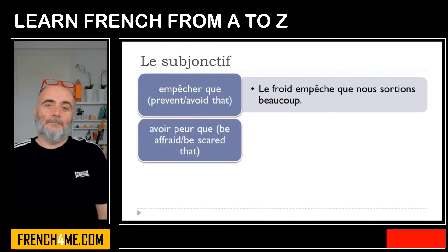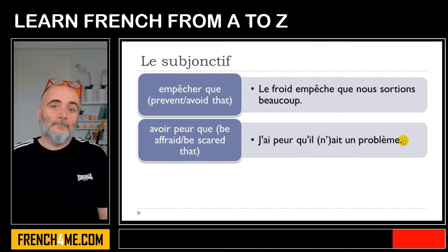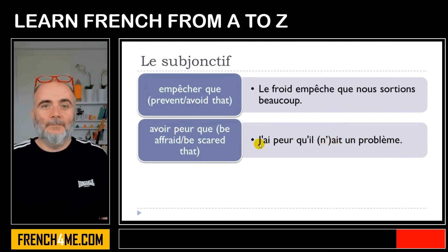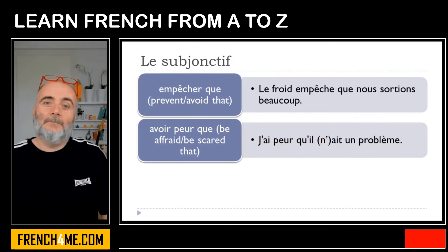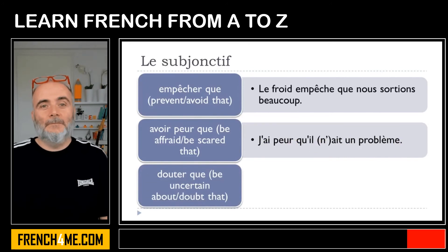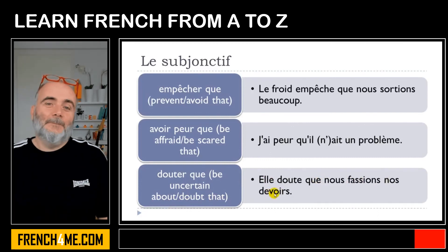Avoir peur que — 'be afraid, be scared that'. J'ai peur qu'il n'ait un problème — and note it's also possible without the negative form: j'ai peur qu'il ait un problème. Douter que — 'be uncertain about, doubt that'. Elle doute que nous fassions nos devoirs.